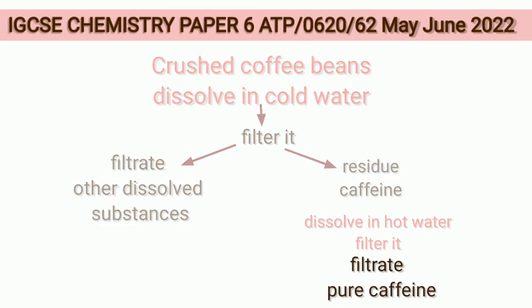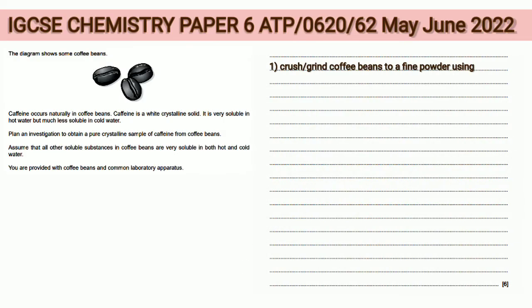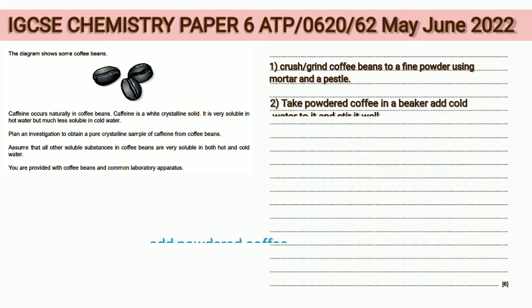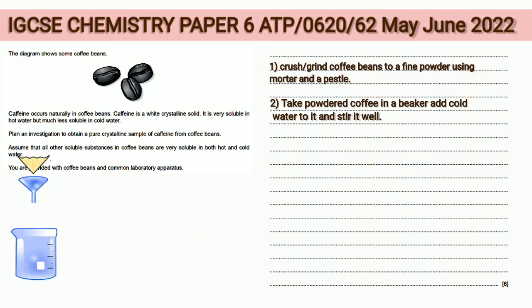First point: crush or grind the coffee beans to a fine powder using a mortar and pestle — you must keep mentioning the laboratory apparatus being used. Second point: take the powdered coffee in a beaker, add cold water to it, and stir it well. Third point: filter it using a funnel and filter paper.